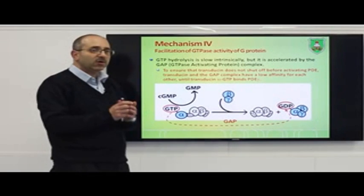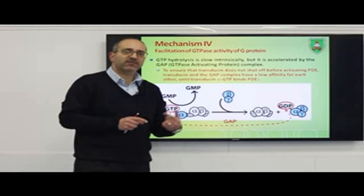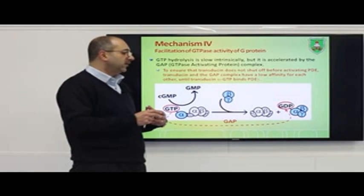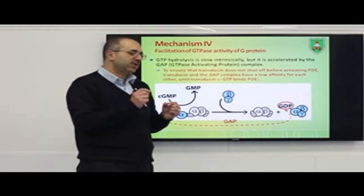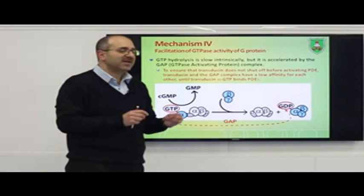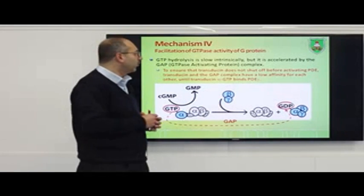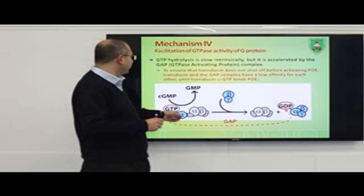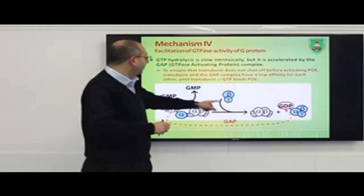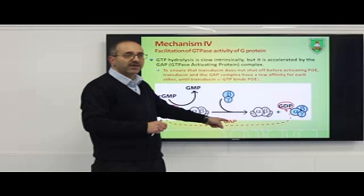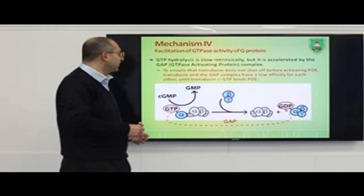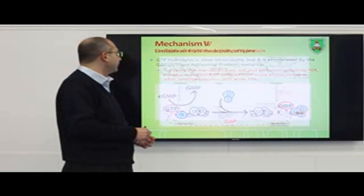Mechanism number four also depends on the GTPase activity of the G-protein. This GTPase activity can be accelerated by proteins known as GTPase-activating proteins (GAPs). When the alpha subunit is bound to GTP, it can associate with GAP proteins, which accelerate the GTPase activity of the alpha subunit.